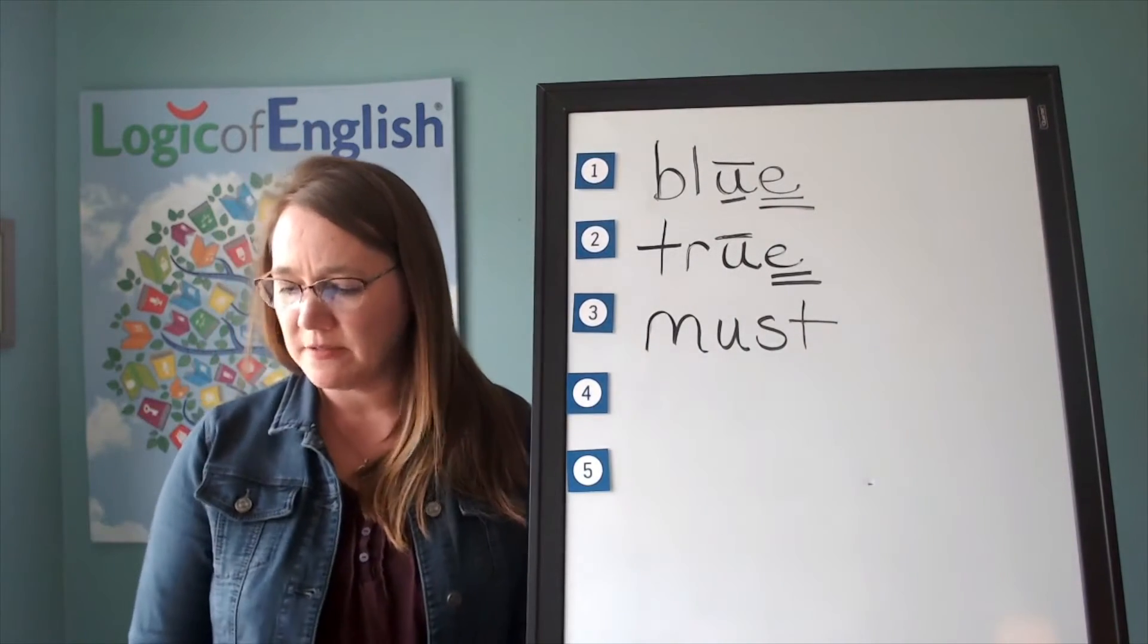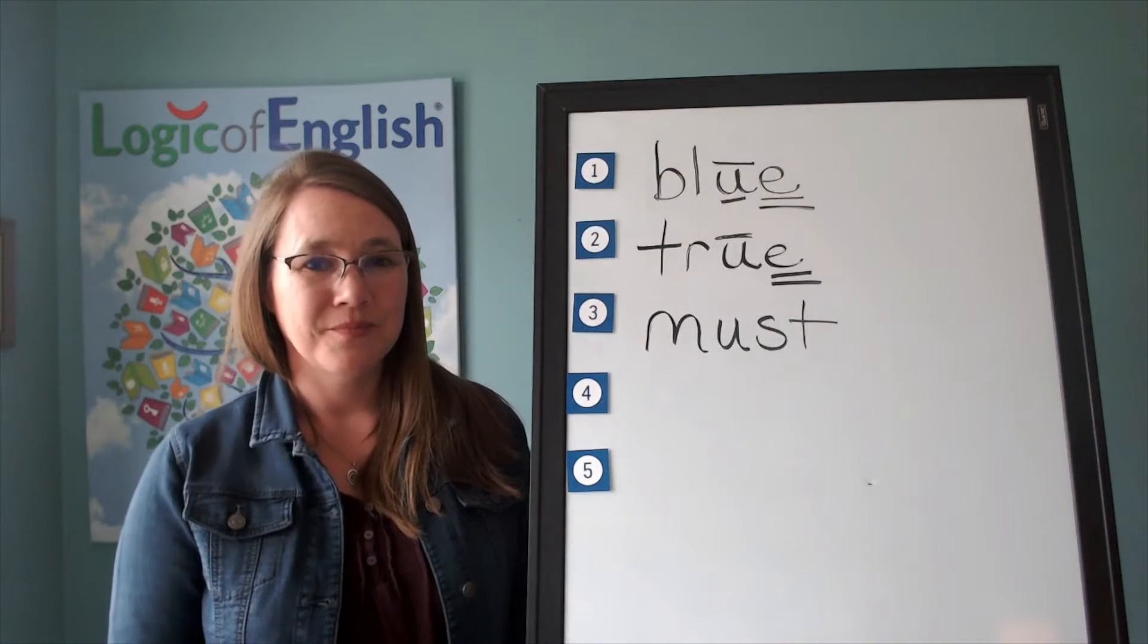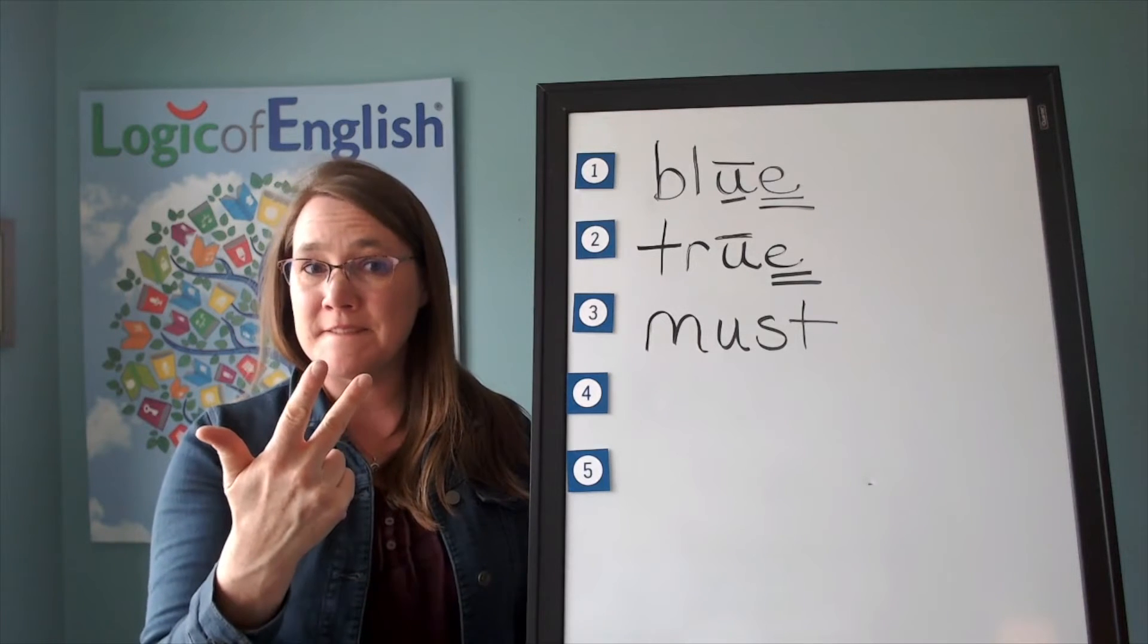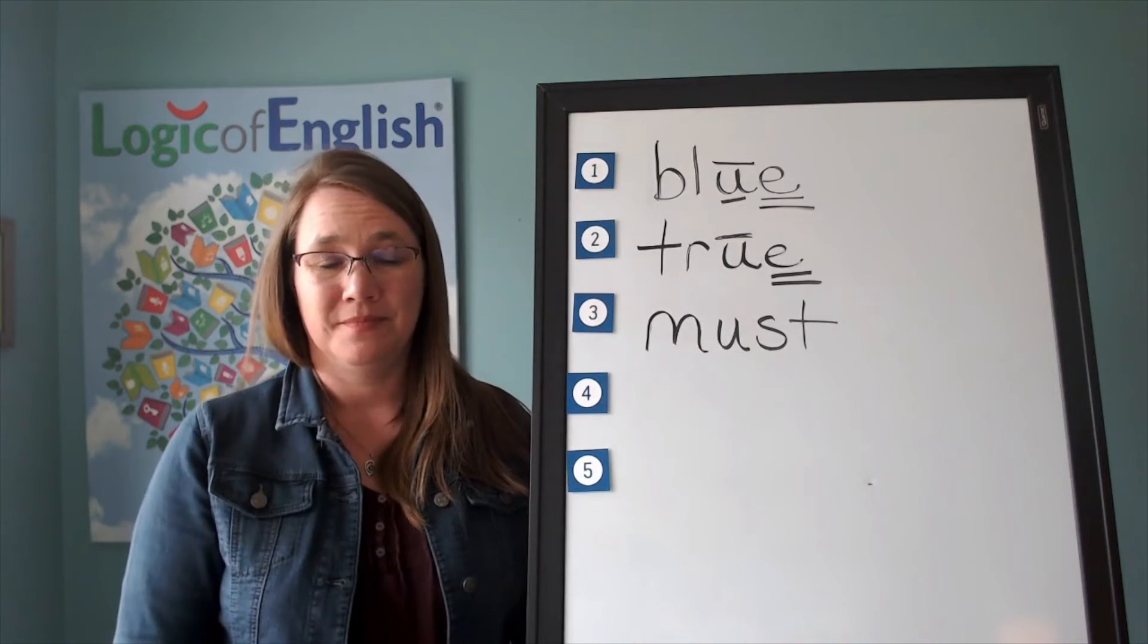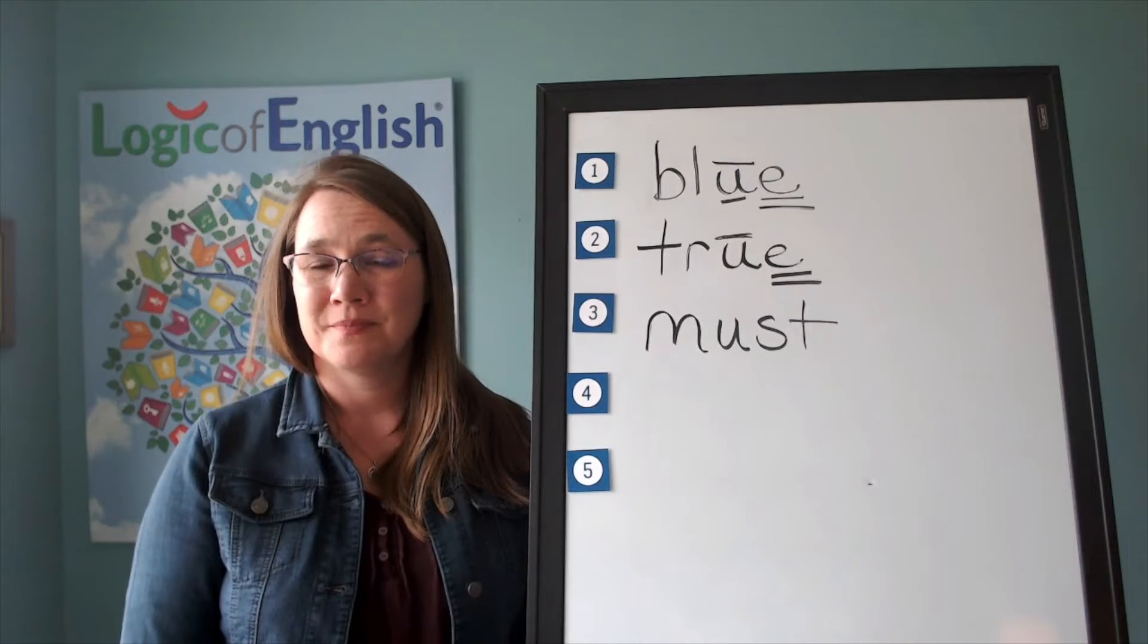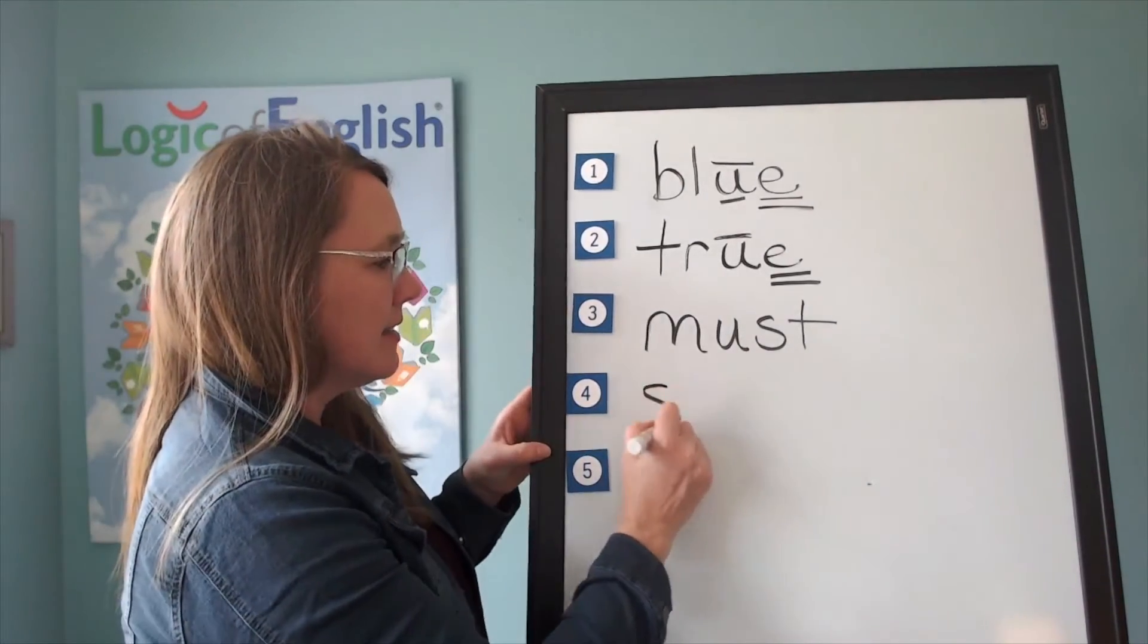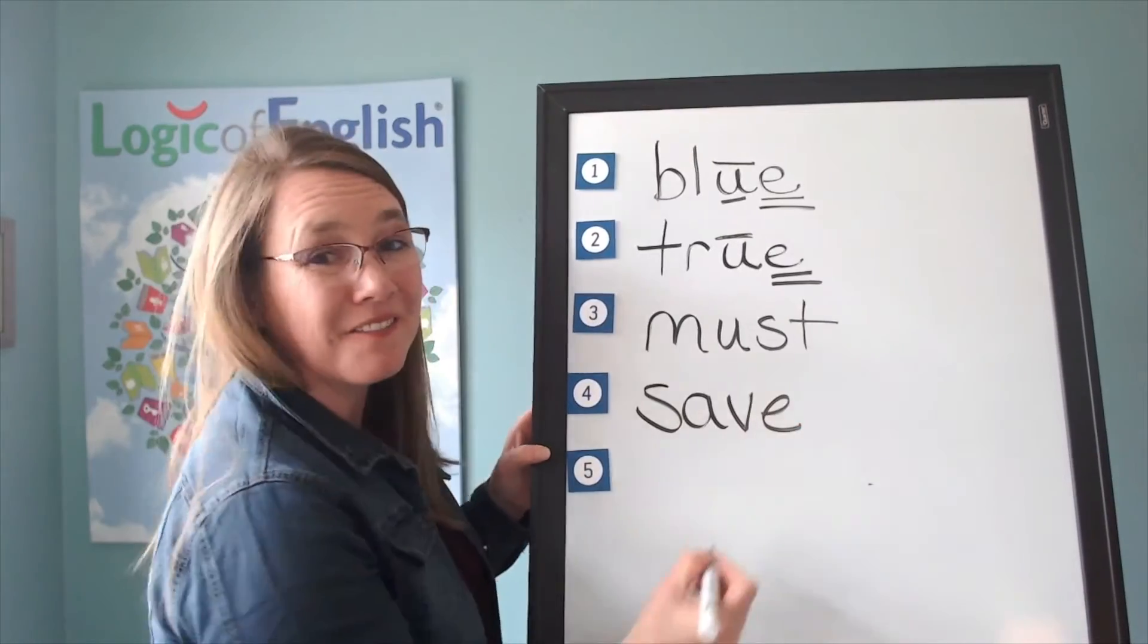The next word is save. I will save my money. Save. Go ahead and say save. Save. Let's sound it out. S-s. A-v. Silent final E. Go ahead and write save. Now help me to write it. S-s. A-v. Silent final E.